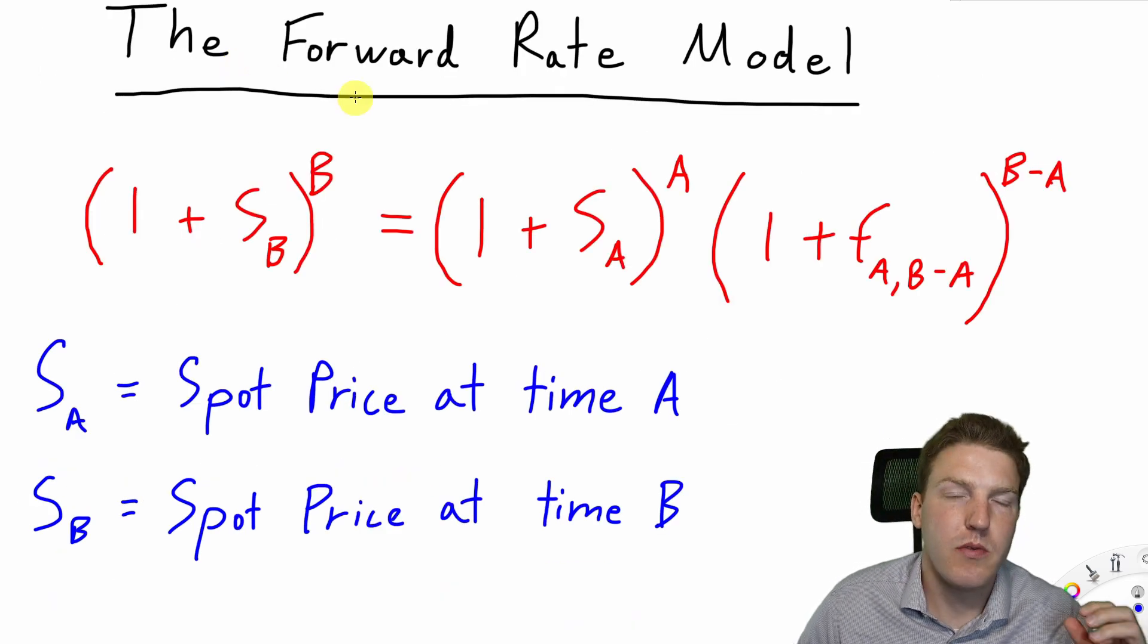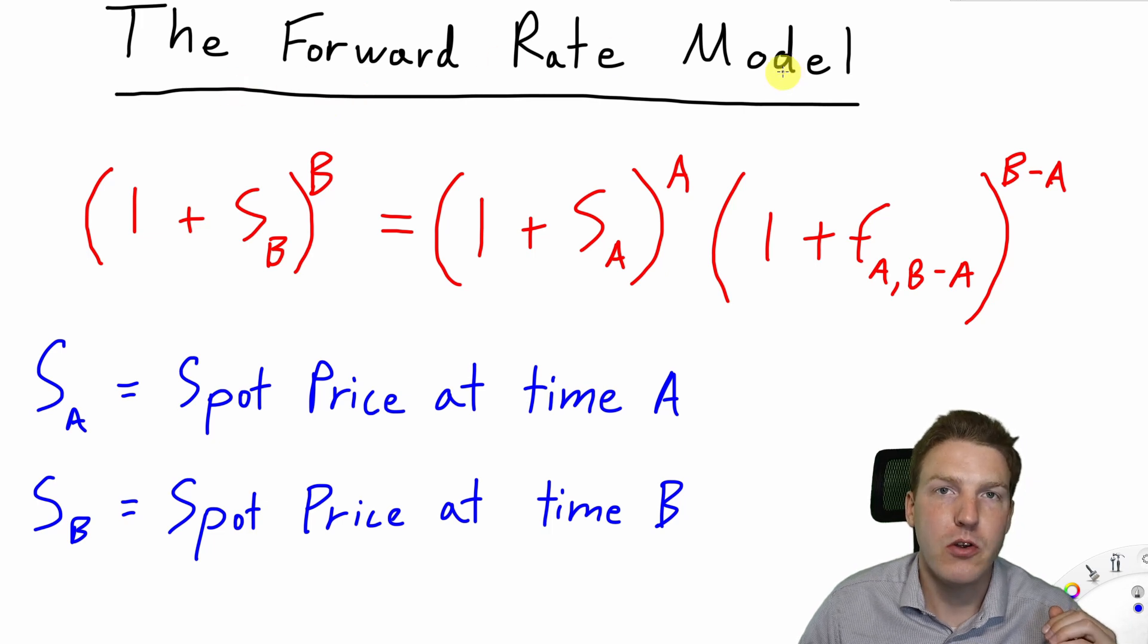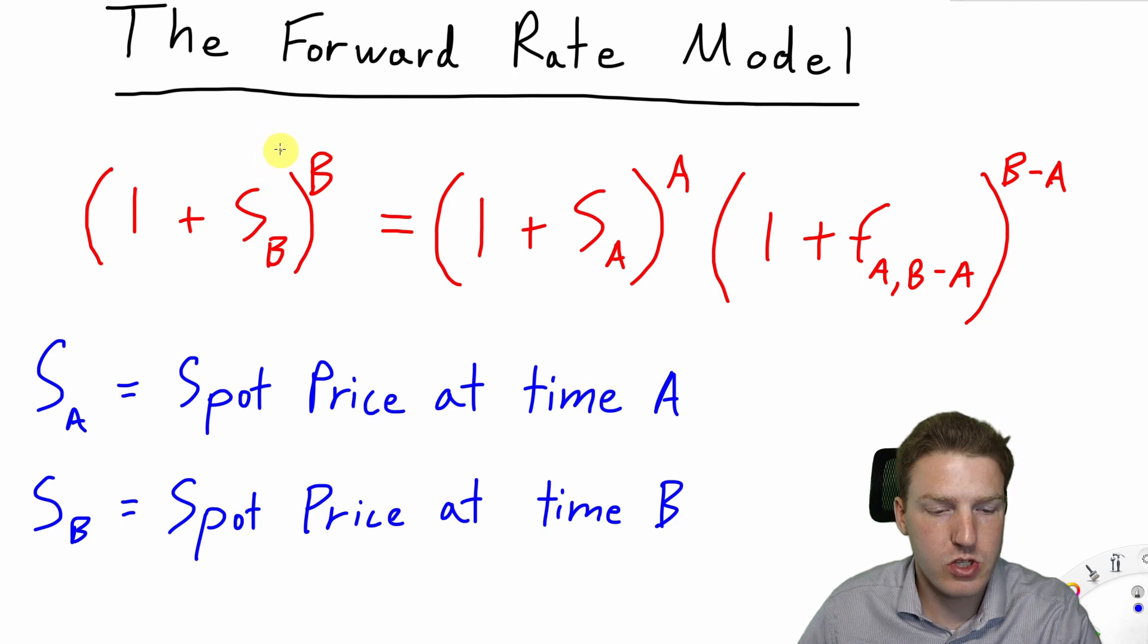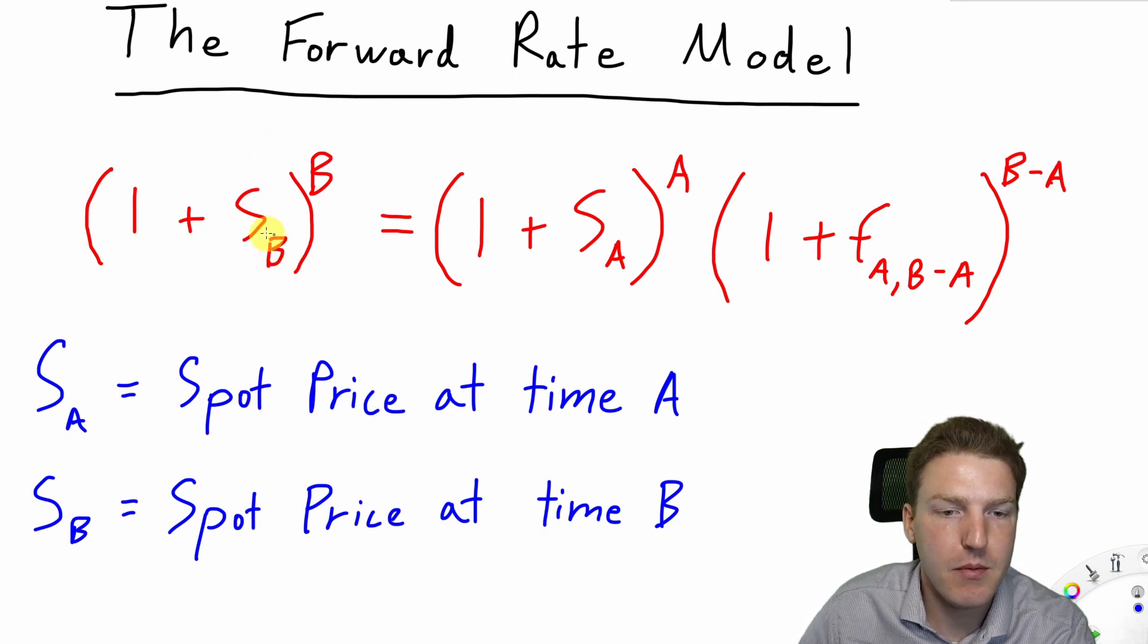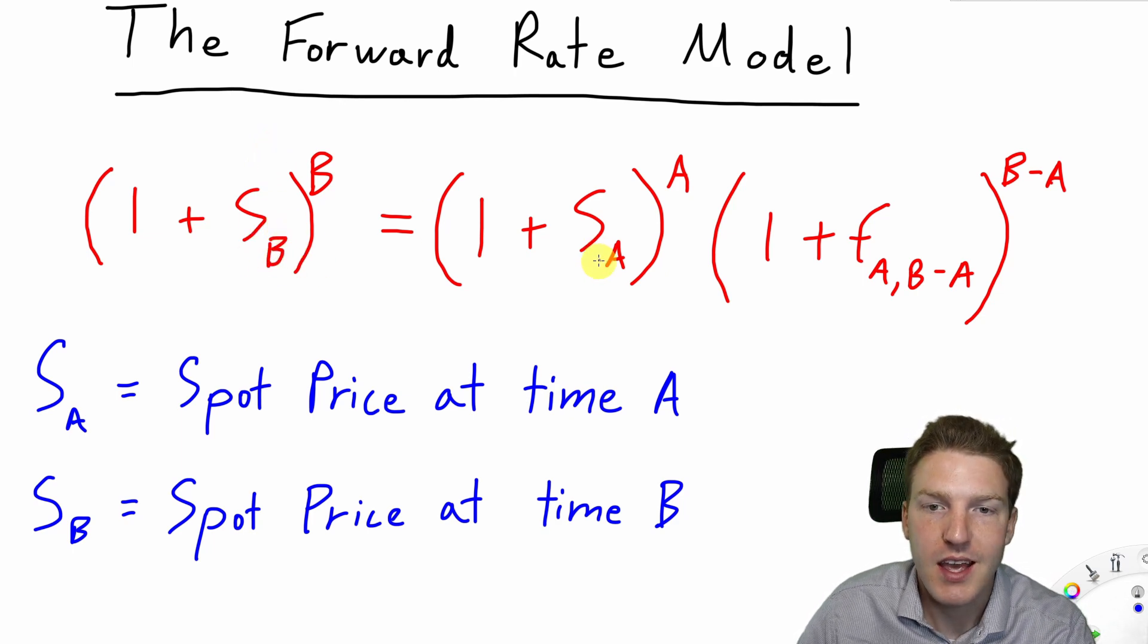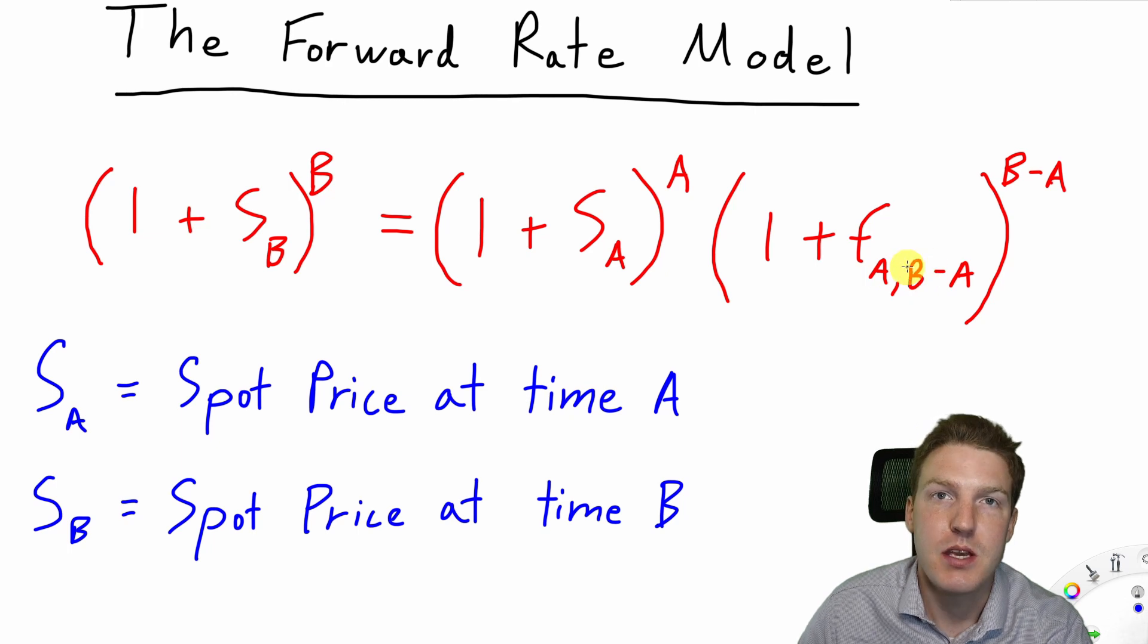An important concept to refresh on is the forward rate model, and we can see this represented in the formula below. This shows us that we can use the spot price at time B and the spot price at time A to derive the forward rate between times A and time B.